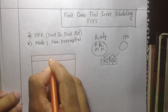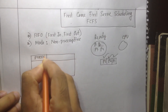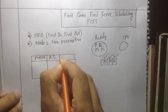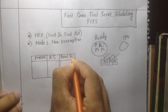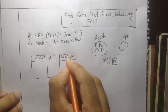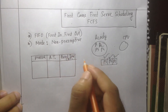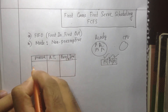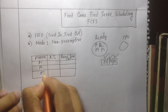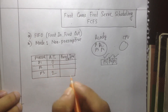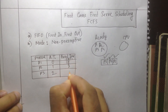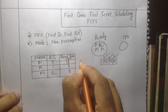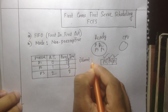The example involves processes in a table. Here we have columns for arrival time and burst time. Arrival time is when a process first arrives. Burst time is the CPU time a process needs to execute. We have processes P1, P2, P3 with arrival times 0ms, 1ms, 2ms and burst times 18ms, 3ms, 3ms.